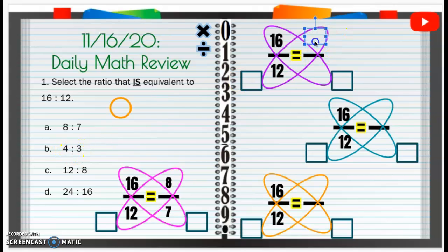4 to 3, I'm going to put 4 up here, 3 down here. C says 12 to 8, 12 to 8, and D says 24 to 16. All right, now let's go ahead and cross multiply.